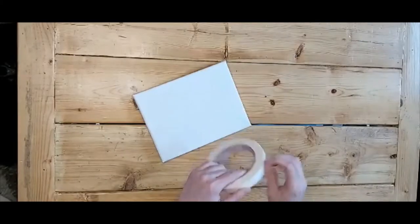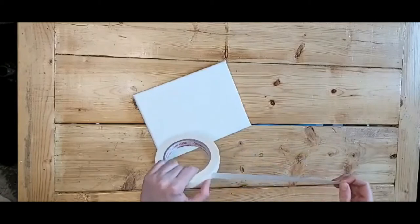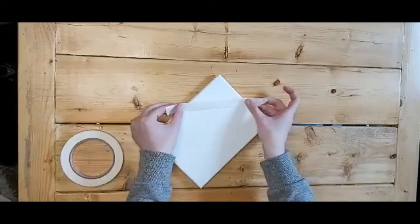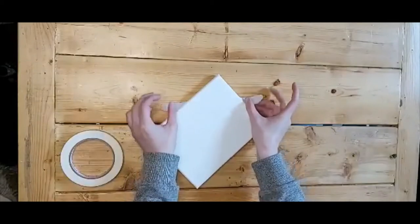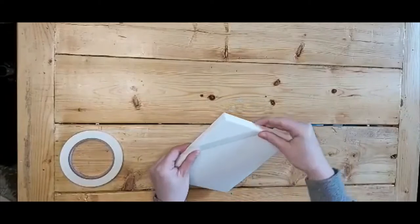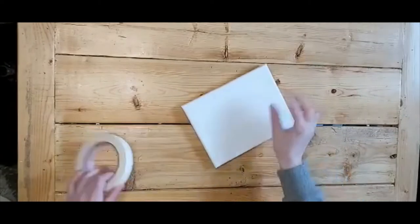Step one in this piece of art is to take our masking tape and place it randomly through our canvas. You can do any pattern you want. I'm just going to do a random geometric pattern for this one, so I'm going to place the masking tape wherever I like.